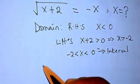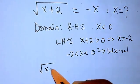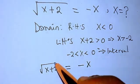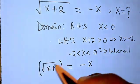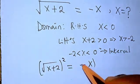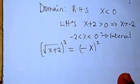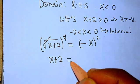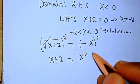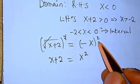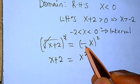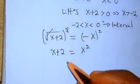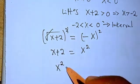So we have root of x plus 2 equals minus x. To get rid of the radical sign we are going to square both sides. Squaring both sides cancels the radical, giving us x plus 2 equals x squared — the square neutralizes the negative so we get positive x squared.